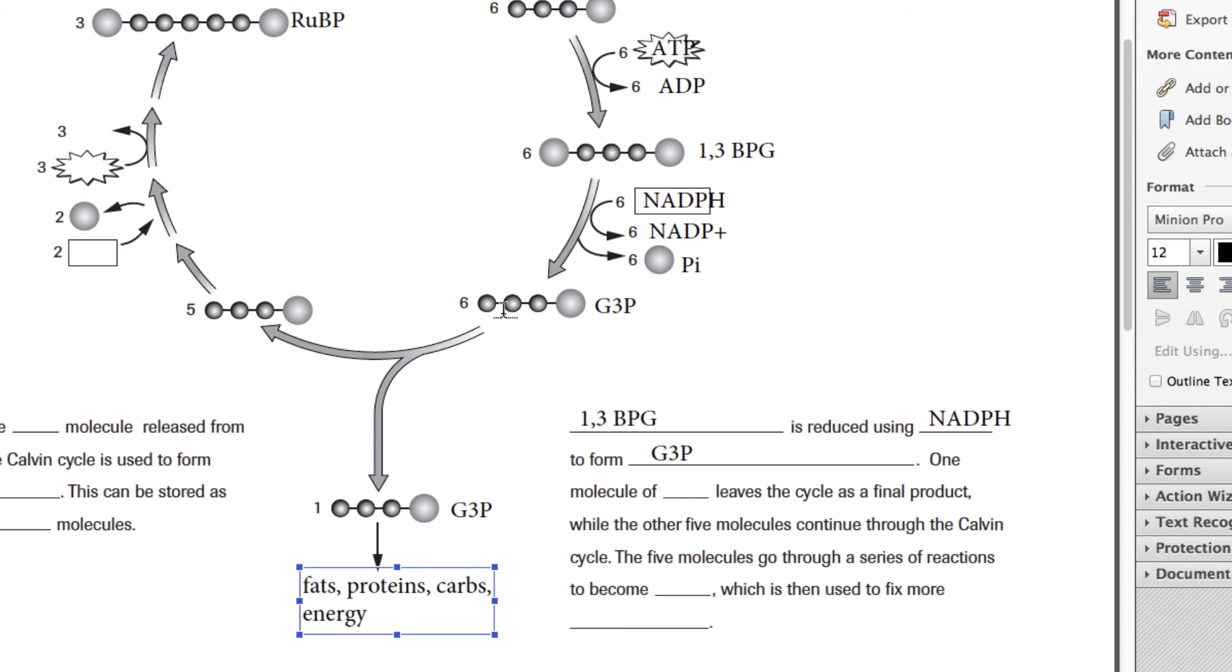Let's put down below, this is still G3P. I'm just going to label it as such. And then from G3P, we can make a lot of stuff. You can make fats, proteins, carbs, and energy. Those are the main things that you can make with G3P. Now notice that one of them goes off, but you still have five that move on. This molecule is still G3P. One molecule G3P leaves the cycle as a final product, while the other molecule continues through the Calvin cycle.